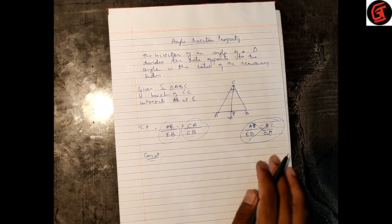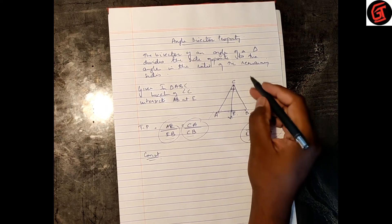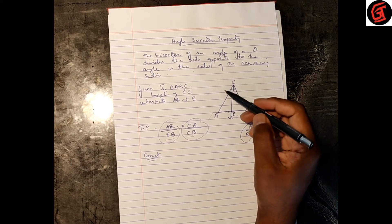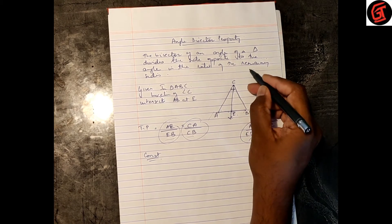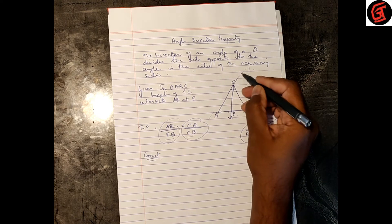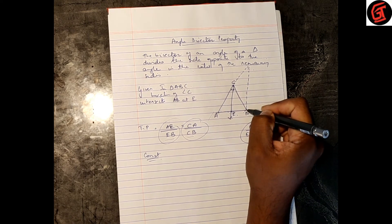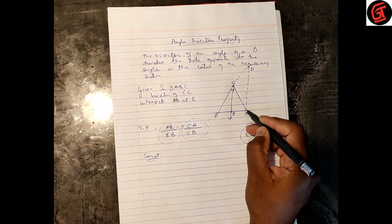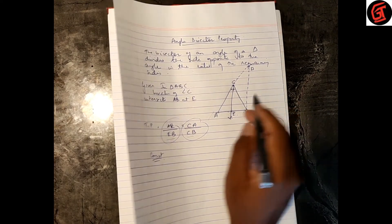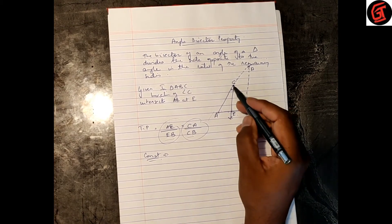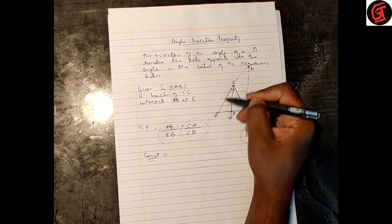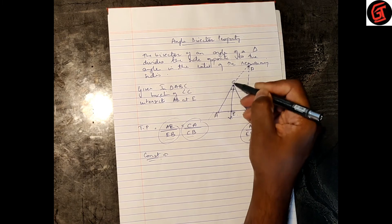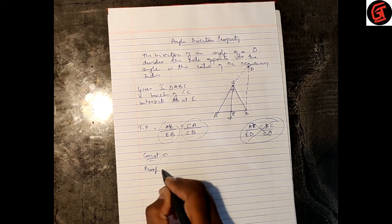To solve this in an easy manner, we do a construction. We draw a line BD parallel to CE through point B, and extend ray CA so that it intersects this line at point D. So the construction is: draw line BD parallel to CE, extend ray CA to intersect BD at point D.